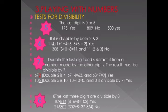Let me explain divisibility of 7 one more time. First, you double the last digit. For example, the last digit is 5 — double 5 gives you 10. Then subtract: 10 minus 10 is 0. If the answer after subtracting is 0 or divisible by 7, then the whole number is divisible by 7.